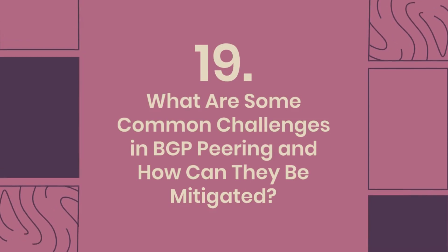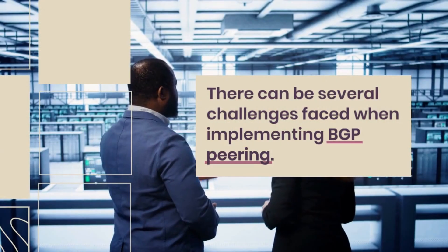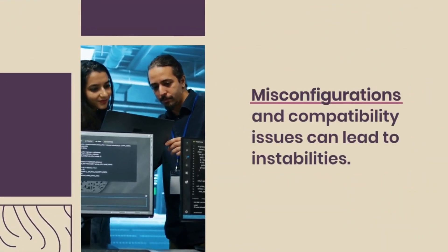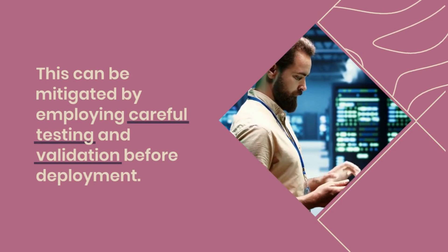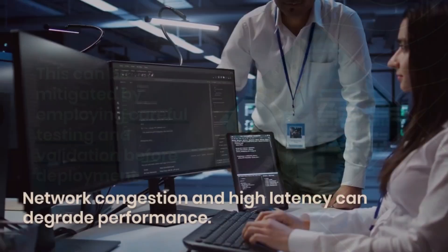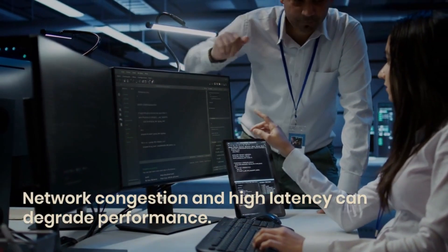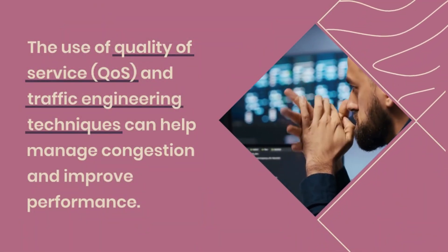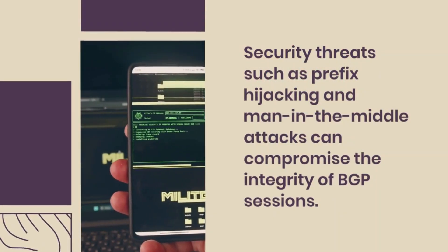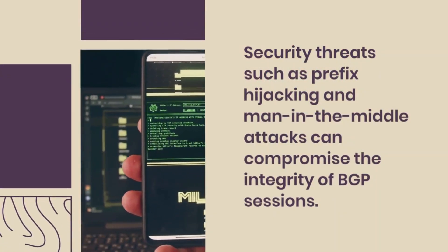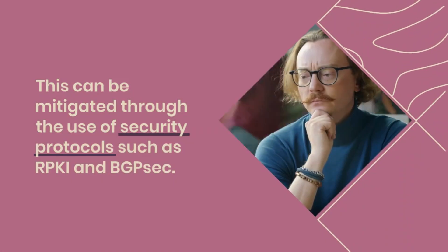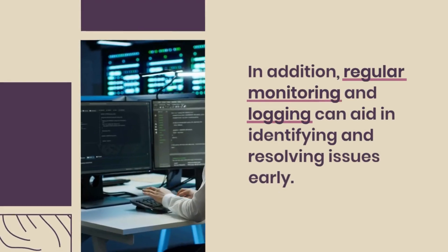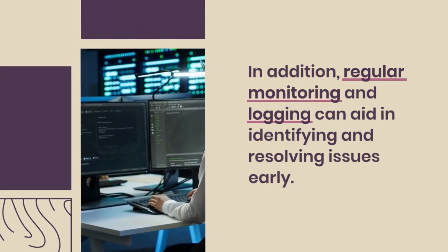What are some common challenges in BGP peering and how can they be mitigated? Misconfigurations and compatibility issues can lead to instabilities — mitigated by careful testing and validation before deployment. Network congestion and high latency can degrade performance; quality of service (QoS) and traffic engineering techniques can help manage congestion. Security threats such as prefix hijacking and man-in-the-middle attacks can compromise BGP session integrity, mitigated through security protocols such as RPKI and BGP SEC. Regular monitoring and logging also aid in identifying and resolving issues early.